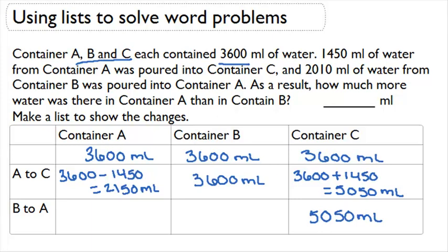But now container B is having water poured out of it. So we're going to start off with our 3,600. We're going to subtract the 2,010 that was poured out. And that's going to give us a total of 1,590 milliliters.